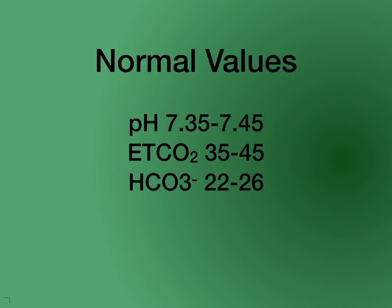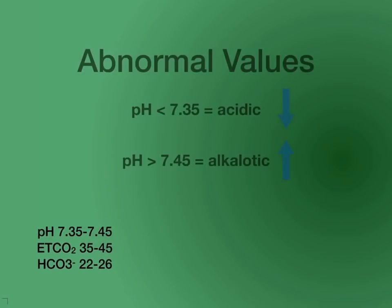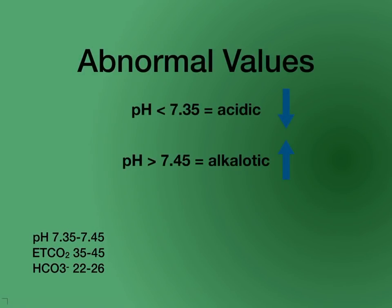A little refresher: the pH of the body is normally 7.35 to 7.45. End-tidal CO2, which we measure through capnography, is 35 to 45. And the bicarbonate ion, which we get from ABGs, is 22 to 26. Even though neutral pH is 7.0, anything below 7.35 we consider acidic, and anything over 7.45 we consider alkalotic.